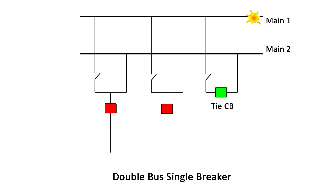The double bus, single breaker scheme is more expensive and requires more installation space than the single bus configuration. It is common to find this scheme with an additional transfer bus in transmission substations.